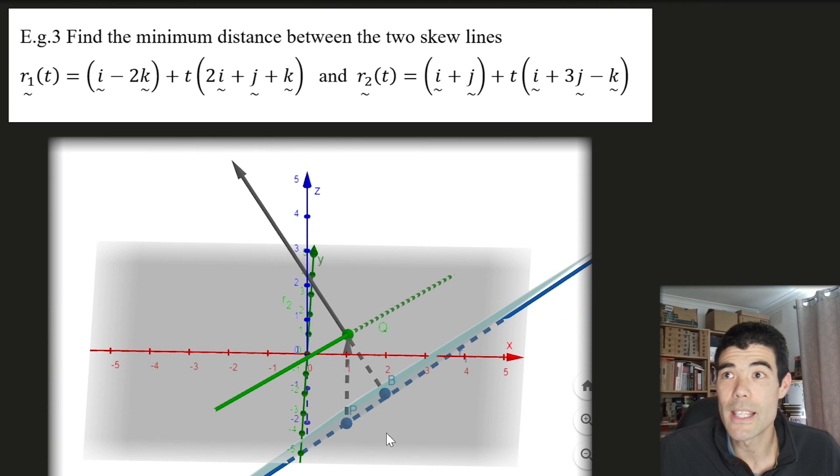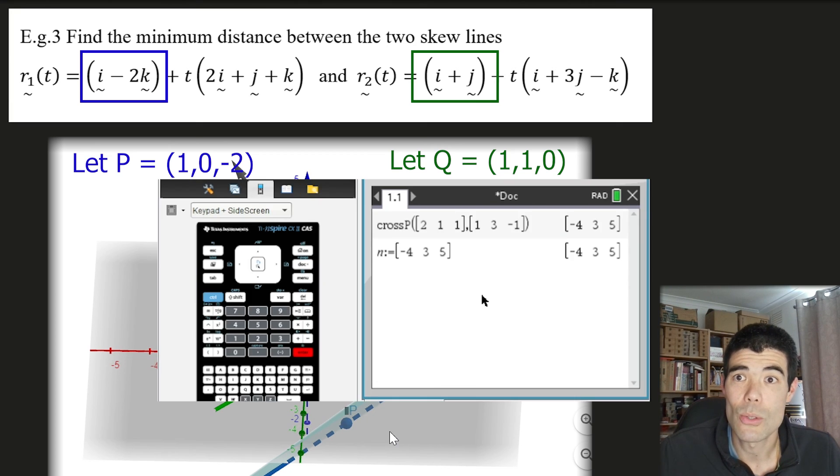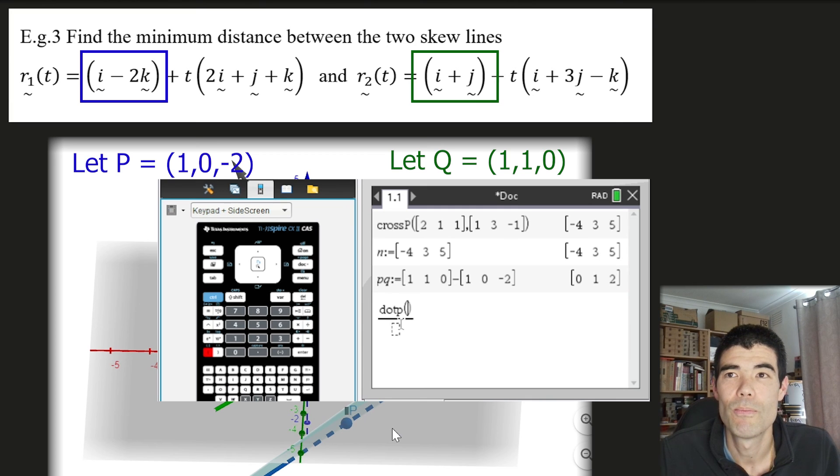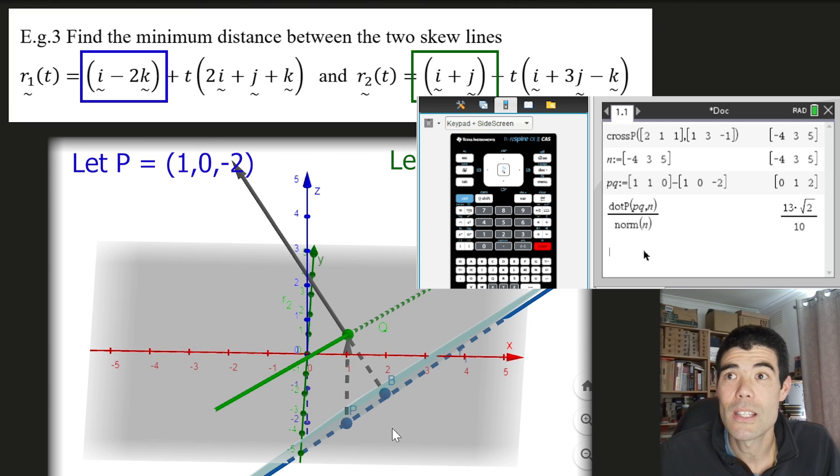So now what we can do is find any vector PQ, where P is one point on the first line and Q is one point on the second line, and find the vector resolute or vector projection of PQ onto our normal vector again. Points P and Q are also really easy to get from the form of the lines we have there. We can just take those vectors out the front. So for R1, let's take P as 1, 0, negative 2. And for R2, let's take Q to be 1, 1, 0. And then vector PQ would be a vector from that point on line R1 to the point on line R2. Again, we're looking for a distance, so we can just use the scalar projection formula, define vector PQ, define our normal vector, and then away we go to get the distance. So another really nice application of vector projections in 3D geometry.